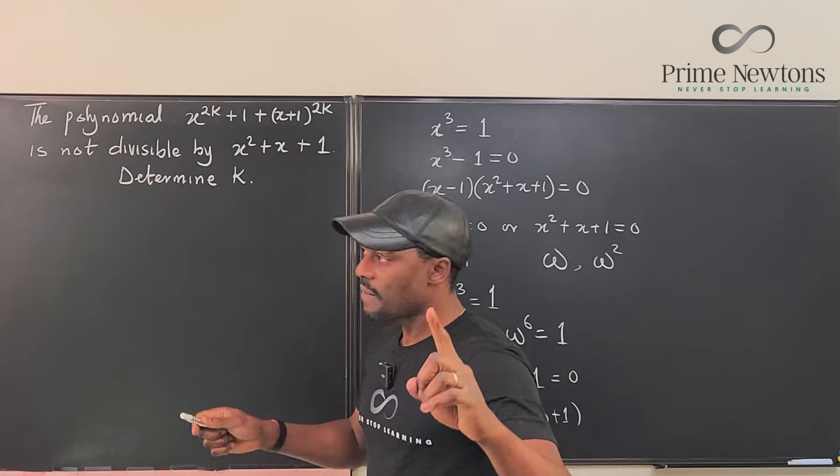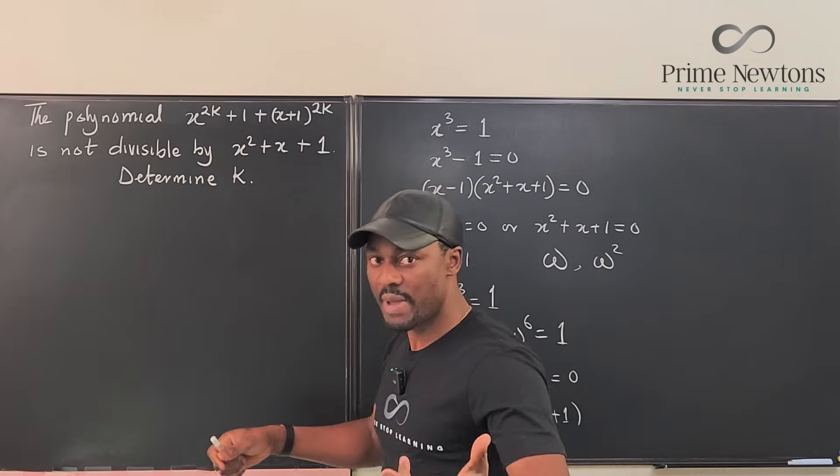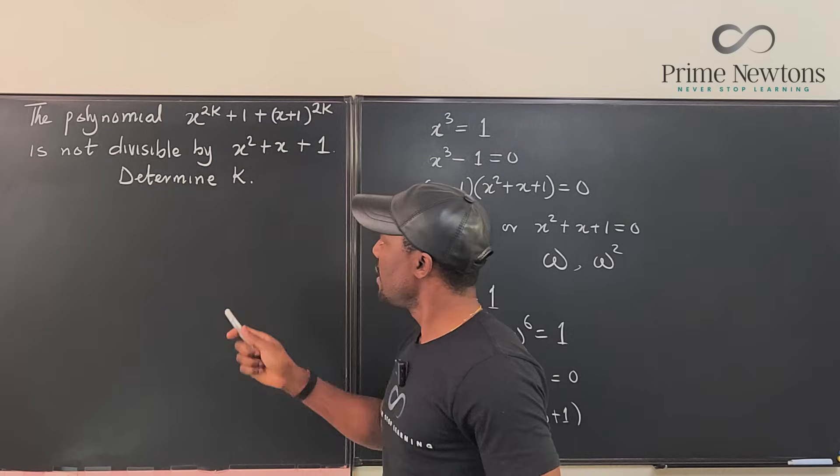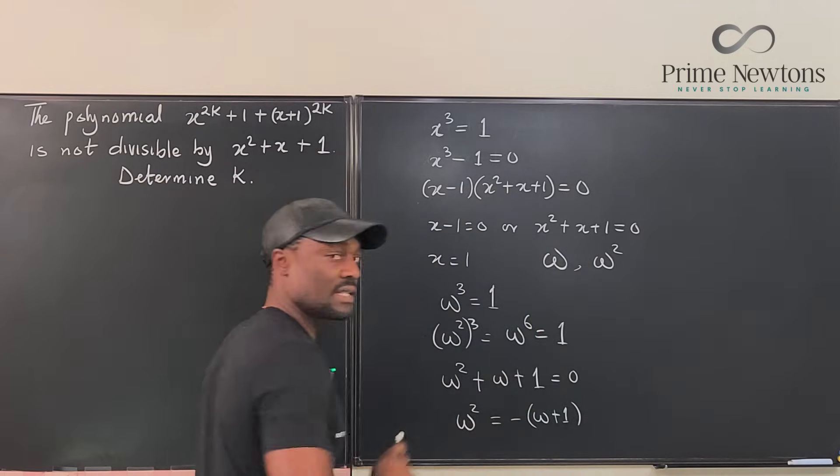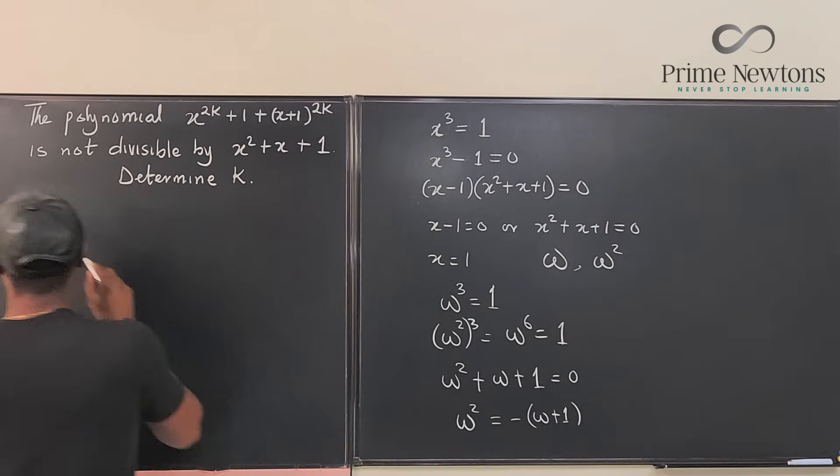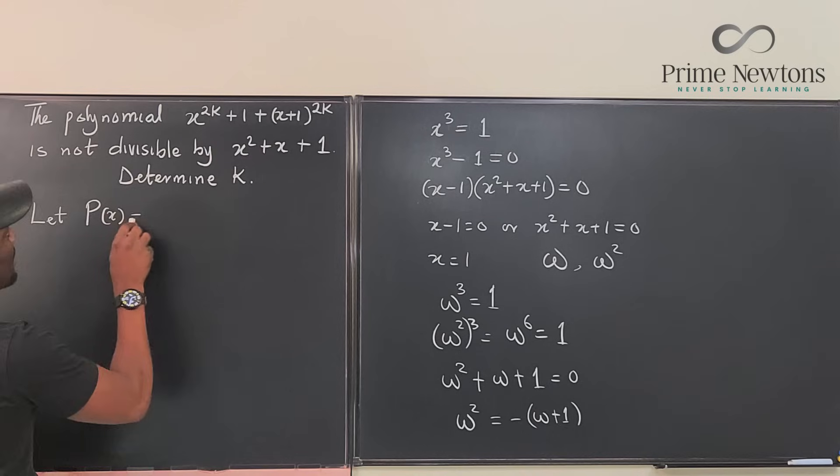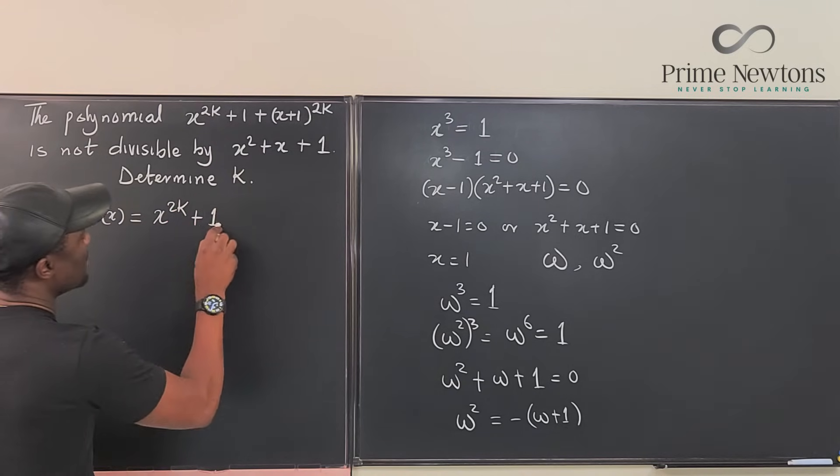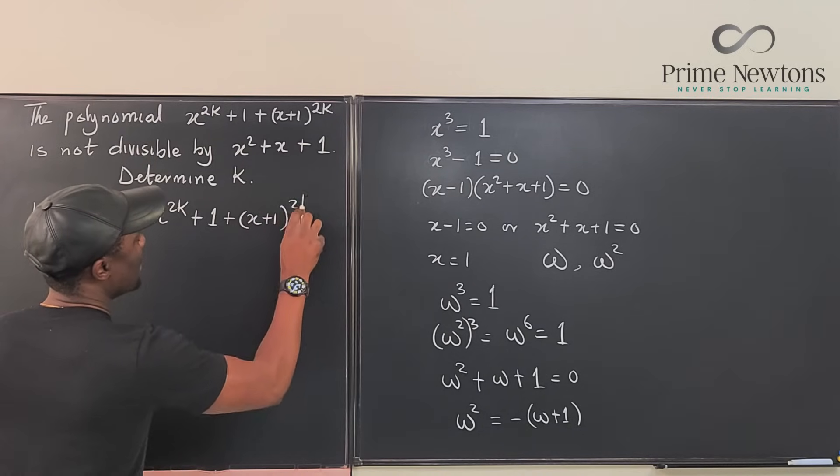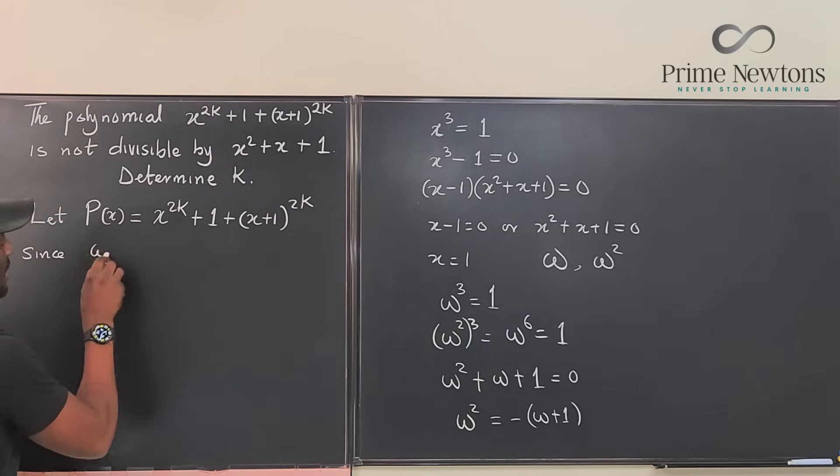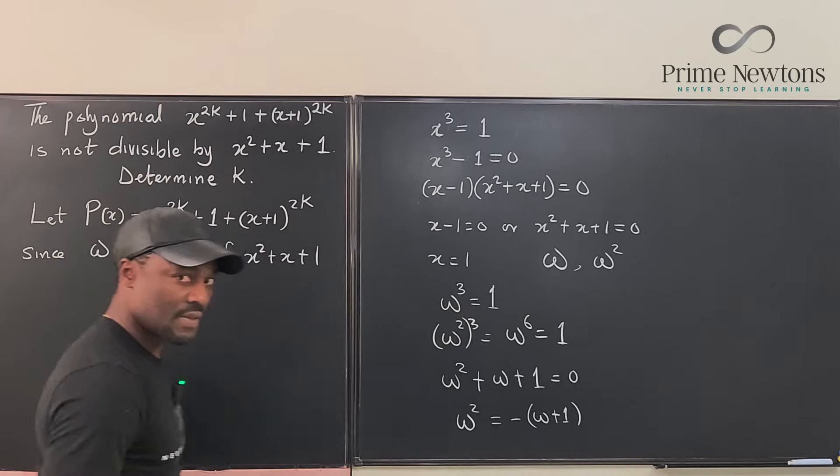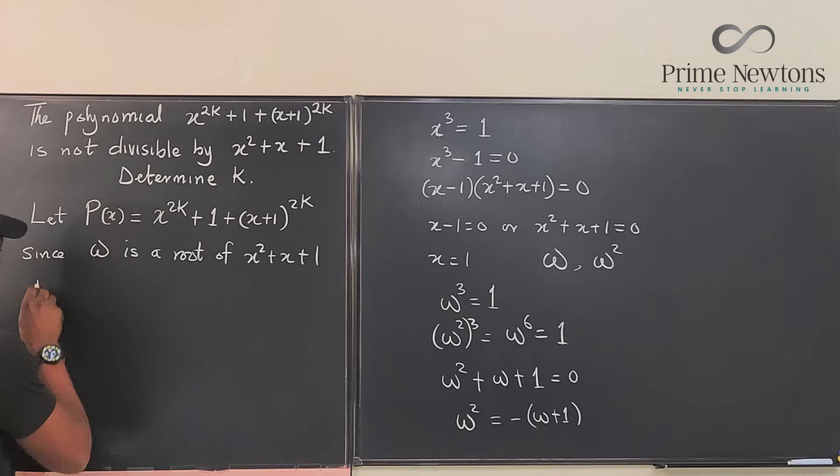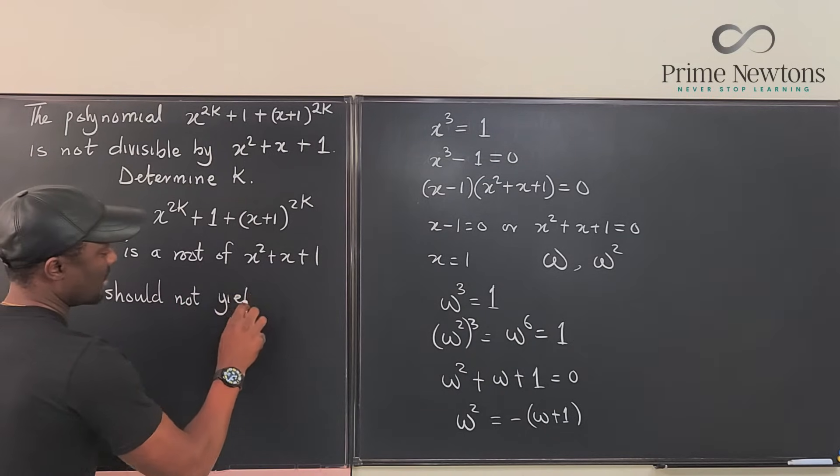What we could say is that since we know that the roots of this are omega, 1 and omega squared, but we're just gonna use omega. If we plug in omega into this, we're gonna get 0, because that's what this equation tells us. Plug in omega, you're gonna get 0. So, let's call this polynomial. Let p of x be equal to x to the 2k plus x plus 1 to the 2k. Since omega is a root of x squared plus x plus 1, then p of omega should not yield 0.